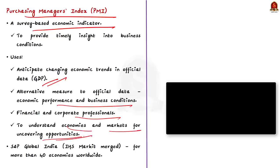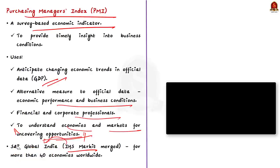PMI is compiled and produced globally by a company called IHS Markit, and the index is produced for more than 40 economies worldwide. The news mentions 'S&P Global India Manufacturing PMI' because IHS Markit has merged with S&P Global. Therefore, IHS Markit is now part of S&P Global, and together they deliver data, technology, and expertise. Originally, PMI was compiled for the manufacturing sector only, but was later extended to include services, construction, and retail.